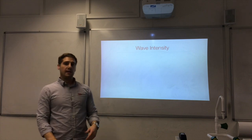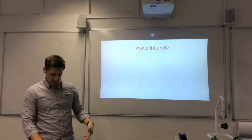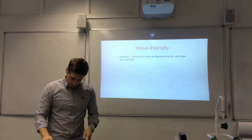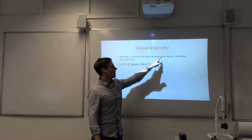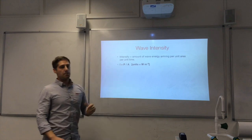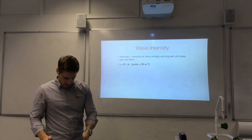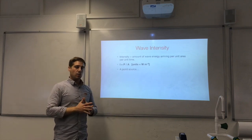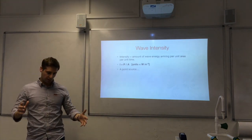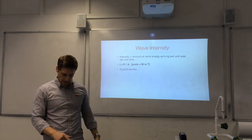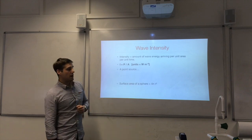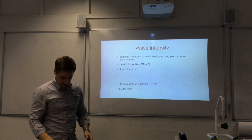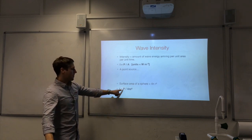Wave intensity tells you how much wave energy is arriving per unit time per unit area — it's power over area, and the units are watts per square metre. For a point source, wave energy travels out in all directions, covering the surface area of a sphere centred on that point source. The surface area of a sphere is 4πr², so I equals P over 4πr².